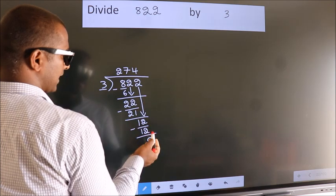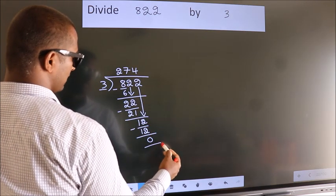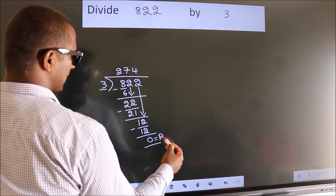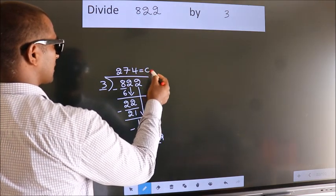No more numbers to bring it down. So, we stop here. This is our remainder. This is our quotient.